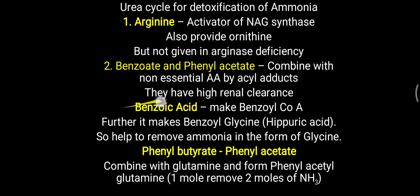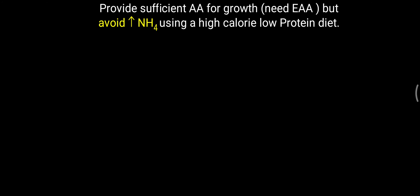Phenyl acetate or phenyl butyrate is more effective than benzoic acid because one mole of phenyl butyrate can remove two moles of ammonia, while one mole of benzoic acid removes only one mole. To summarize, arginine, benzoic acid, and phenyl butyrate can all be given as drugs in urea cycle disorder to decrease ammonia formation and increase nitrogen excretion.